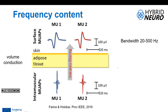So if we record surface EMG, the bandwidth is between 20 and 500 Hz, and we usually use a sampling frequency of 1 kHz. While if we place an electrode within the muscle and record the intramuscular signal, the bandwidth is actually higher than 1 kHz, because these signals are much spikier, and as a consequence we need to sample them at a much higher frequency.